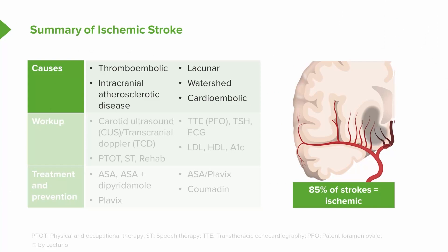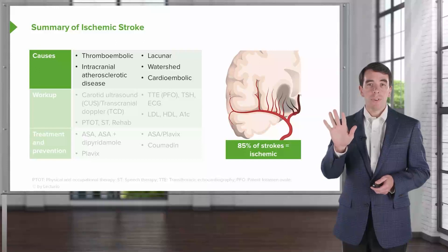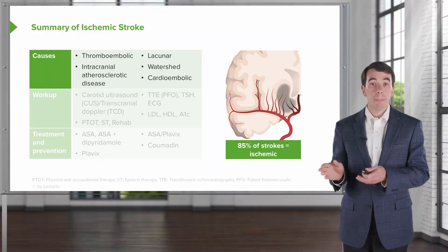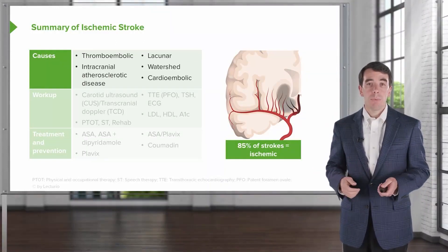When I think about ischemic stroke, I think of five major causes. We can see ischemia, or a blood clot — a reduction in blood flow to a part of the brain — from thromboembolism, intracranial atherosclerosis, lacunar infarcts, watershed ischemia, and embolism or cardioembolism. Those five causes are what we evaluate in patients or clinical vignettes when we're evaluating for an ischemic stroke.